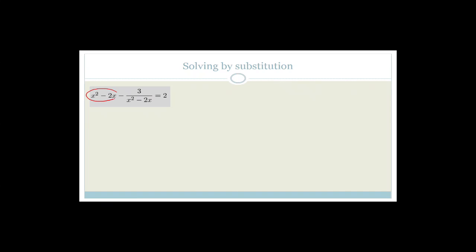They call it k substitution because we're going to let k equal x squared minus 2x. If we do that, then we have k minus 3 over k is equal to 2. That is much more doable. I still need to get rid of the denominator, but if I do that, it becomes k squared minus 3 is equal to 2k. Now that looks like a pretty trinomial. Rearranging gives k squared minus 2k minus 3 equals 0.